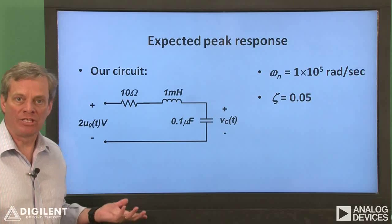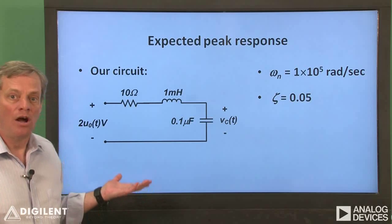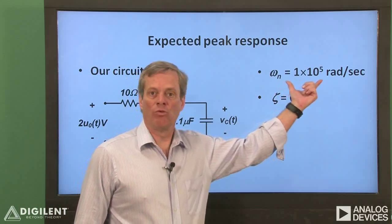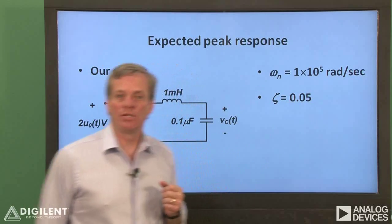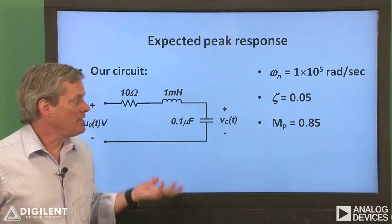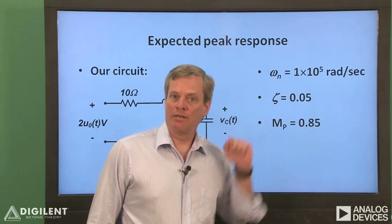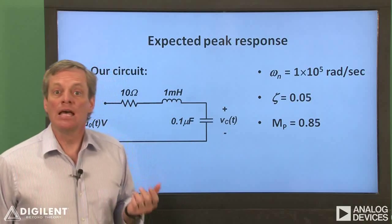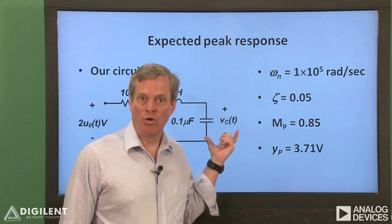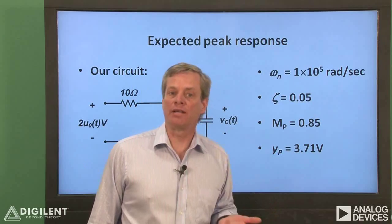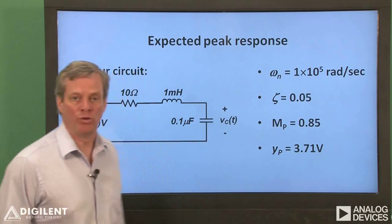For these values of resistance, inductance, and capacitance, our expected natural frequency is 1 times 10 to the fifth radians per second, and the damping ratio is 0.05. This means that we expect the overshoot to be about 85% of the steady state response. Since the steady state response of the capacitor voltage is 2 volts, the maximum response we expect is about 3.71 volts.